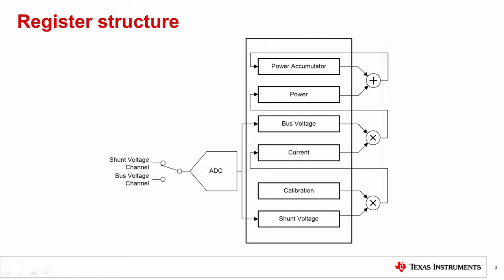The power register is obtained by multiplying the contents of the current register and the bus voltage register contents, then also scaling by a constant. In some devices, the bus voltage register bits are not right-aligned. In order to compute the value of the bus voltage, the bus voltage register contents must be shifted right by a few bits. Please refer to the register information section of the datasheet for device-specific information.